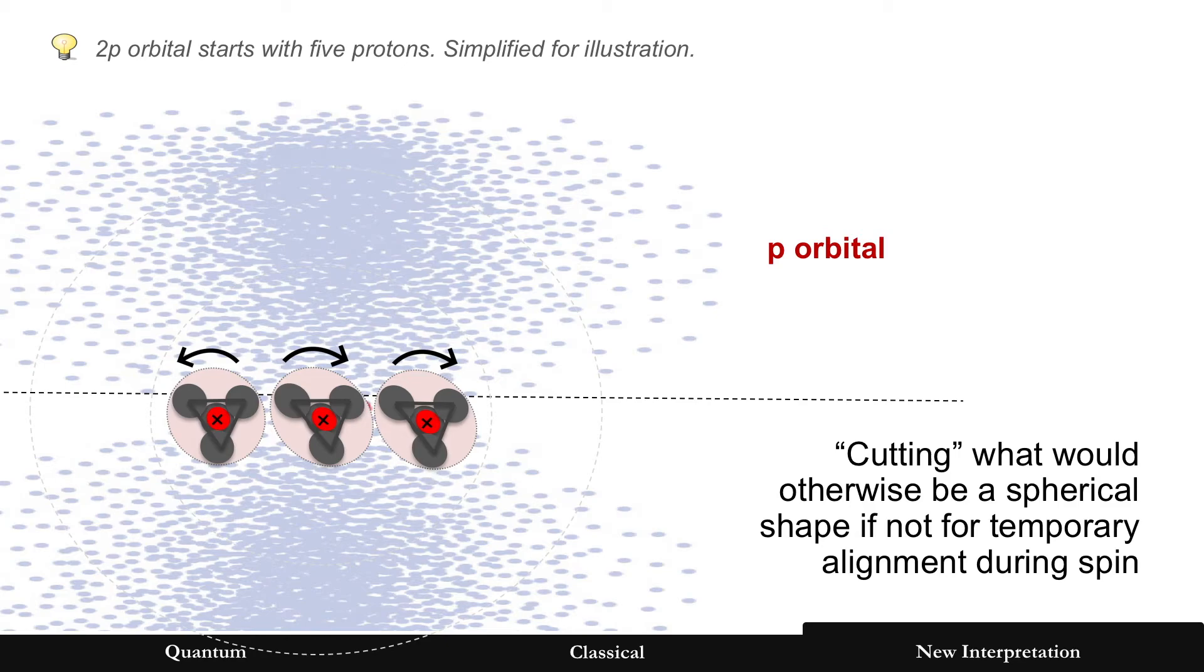And lo and behold, you end up with something that kind of kicks the electron out in a dumbbell shape for the p orbital and then different shapes for d and then for f orbitals. But it's essentially cutting what would otherwise be a spherical shape if it weren't for that temporary alignment of protons as they spin.